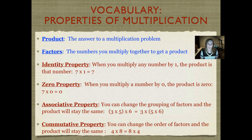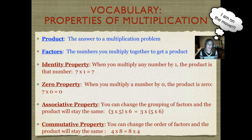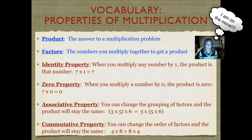Here are our vocabulary terms for today. There's a lot of them, so I want you to go ahead and pause this, write them all down, and then turn it back on, and I'm going to talk about some of them. The product and the factors should be pretty self-explanatory, but the four properties are new to us.